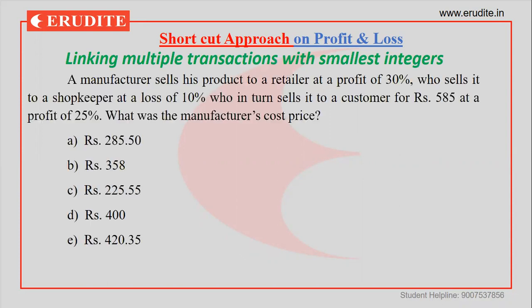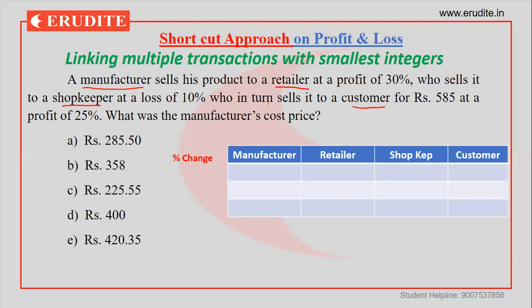We will take one such question. In this question, there are multiple people — first, a manufacturer who sells his product to a retailer with some profit, then retailer to shopkeeper, shopkeeper to customer. Different information is given, one of the data is absolute and the rest are percentages. The approach for these kinds of questions is to convert all percentage changes, which I have written here: manufacturer, retailer, shopkeeper, and customer.